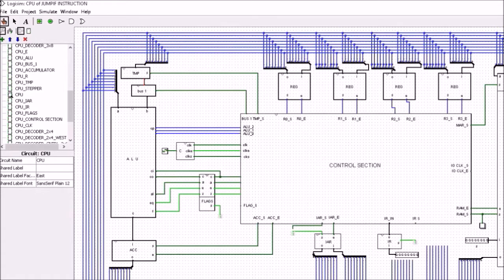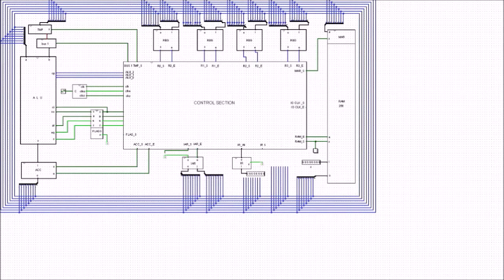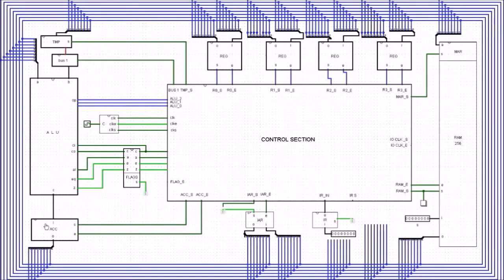Here is our CPU. Looking at it in more detail, you can see the CPU we've seen over the last few videos with all the same components, but in this instance we have one extra component — this is the very last register we're going to add in, and it's called the flag register.